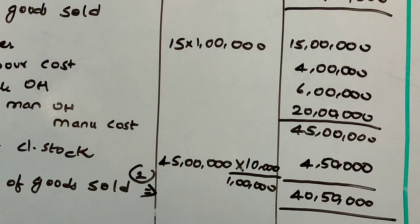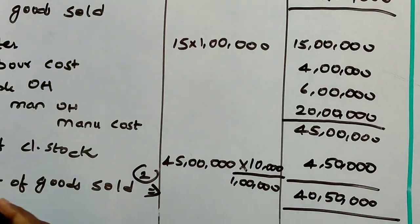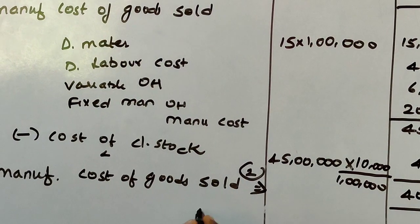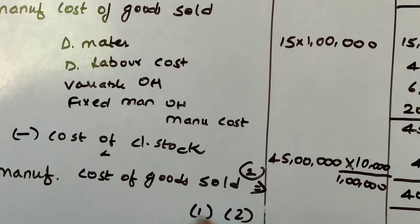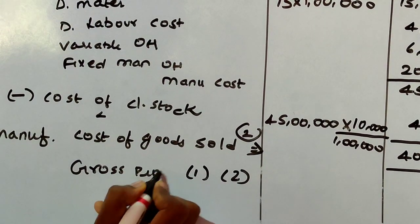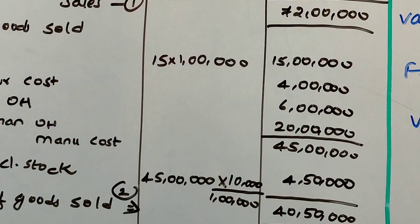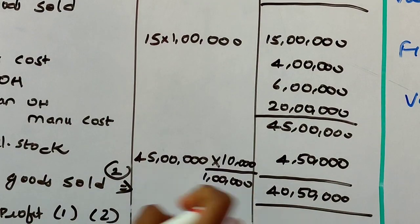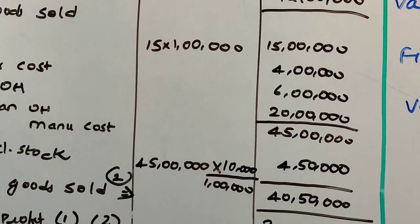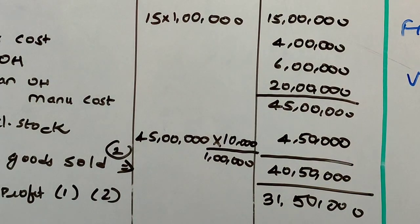So you have sales and manufacturing cost of goods sold. From sales (72 lakhs) minus manufacturing cost of goods sold (40 lakhs 50,000), you get gross profit of 31 lakhs 50,000.